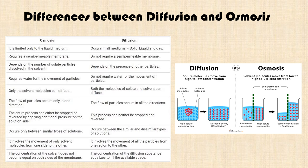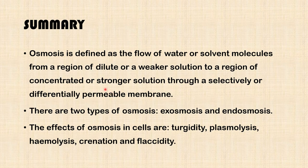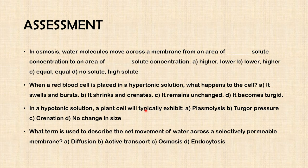This brings us to the end of our lesson. In summary: osmosis is defined as the flow of water or solvent molecules from a region of dilute or weaker solution to a region of concentrated or stronger solution through a selectively or differentially permeable membrane. There are two types of osmosis: exosmosis and endosmosis. The effects of osmosis on cells are turgidity, plasmolysis, haemolysis, crenation, and flaccidity. This concludes the second part of the lesson on the cell and its environment. Please pause this video and attempt to answer the review question. Don't forget to share, subscribe, and like. See you in the next lesson.